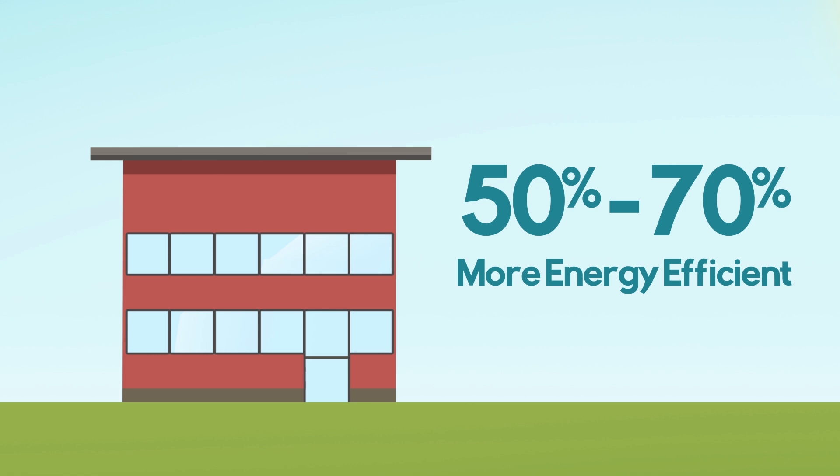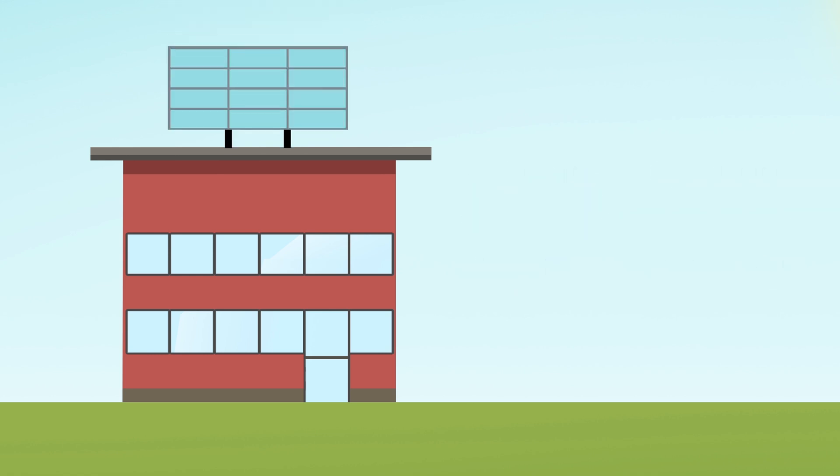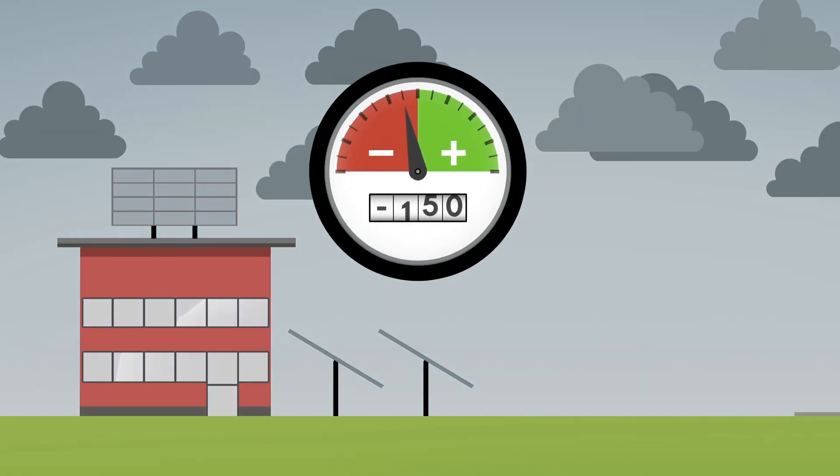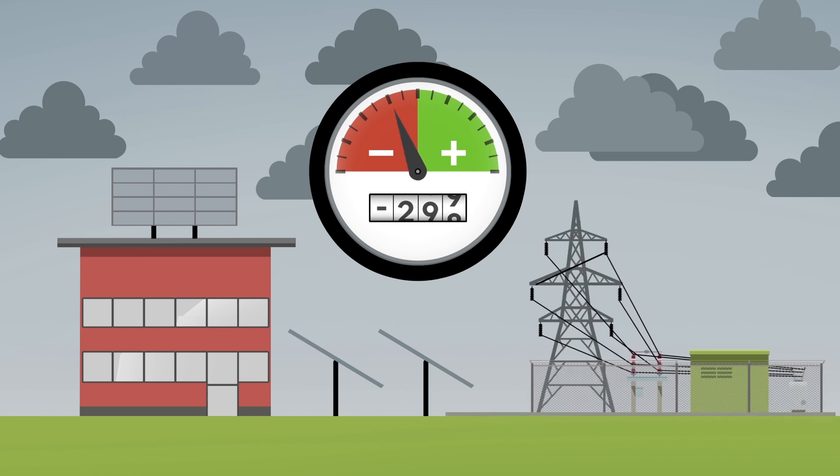In these ultra high performance buildings, the amount of energy used can be completely offset by renewable energy produced on or around the building. When conditions are not suitable for energy generation, the building will draw energy from the electrical grid to meet its needs.